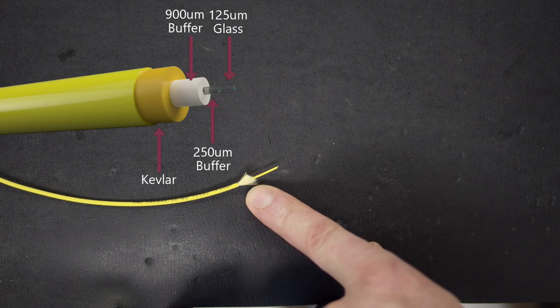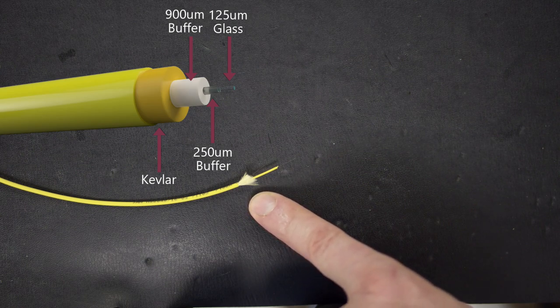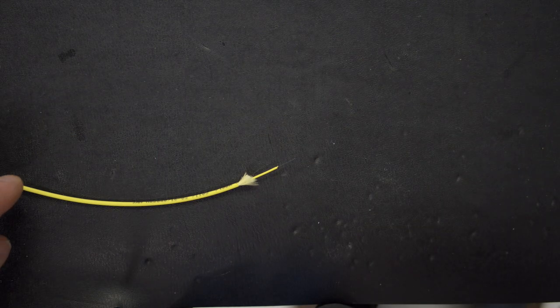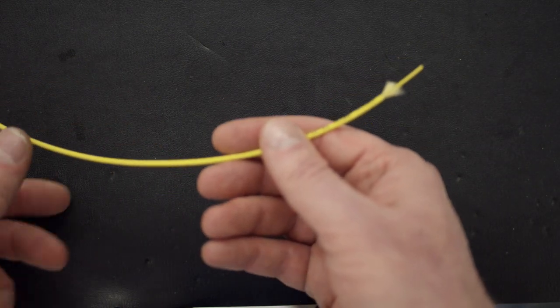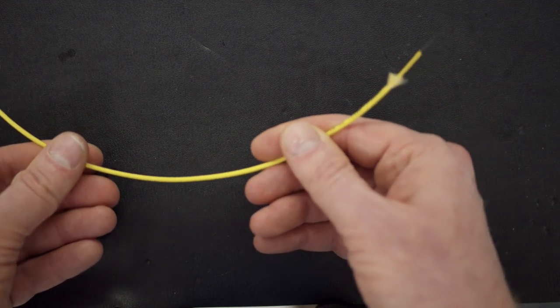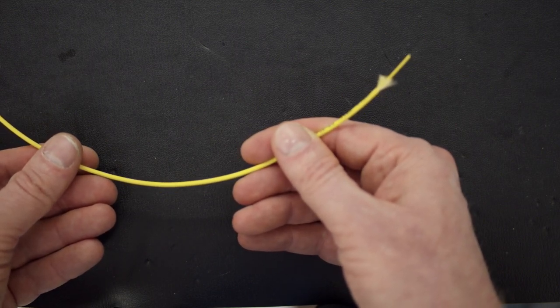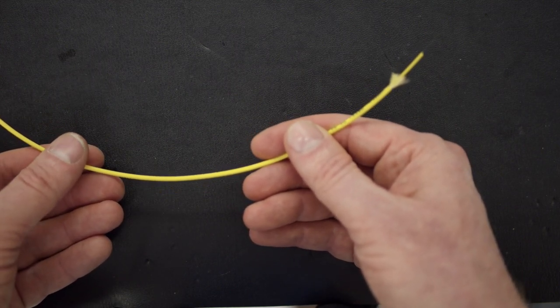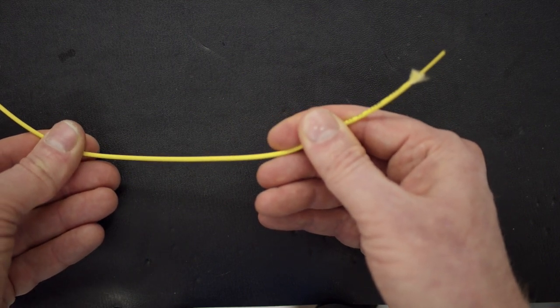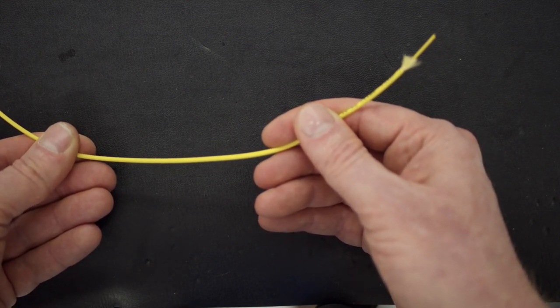Surrounding that is a layer of aramid fiber, what most people know as Kevlar. The Kevlar not only adds more protection against outside forces, but it also serves as the strength member of the cable. When handling cable, it is natural for it to be pulled and tugged. The glass by itself would naturally be very vulnerable to this, so the Kevlar is there to provide all the pulling strength you could ask for, with very little stretching, even under heavy loads.